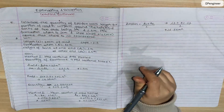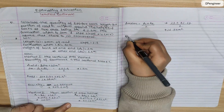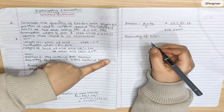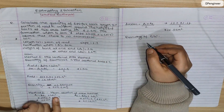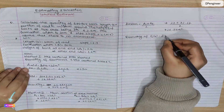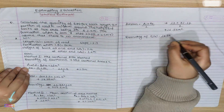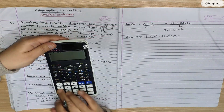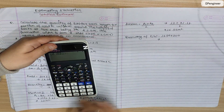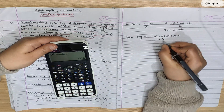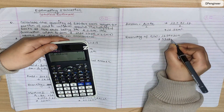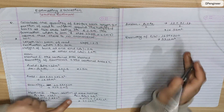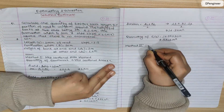Quantity of earthwork using Method 2 (mean sectional area method): quantity equals mean sectional area into length equals 16.56 into 200 equals 3312 cubic meters. That is the answer from the mean sectional area method.